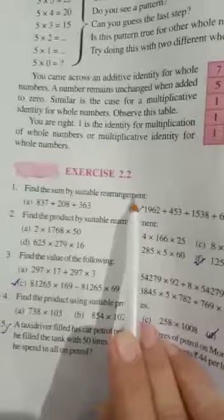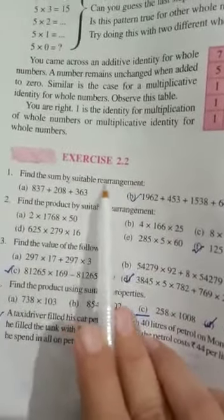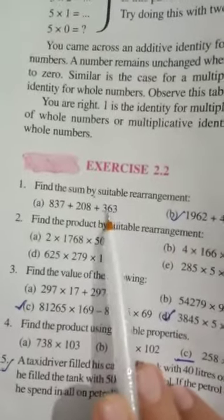So see what's the statement. We have in question number 1, find the sum by suitable rearrangement. Means you can't find this addition directly. You have to find by suitable rearrangement. Part A: we have 837 plus 208 plus 363.